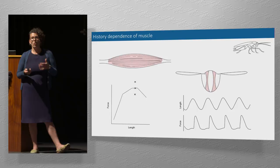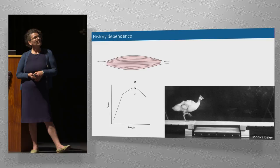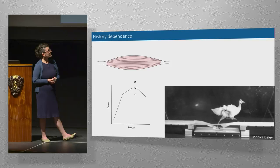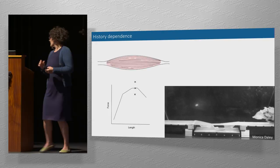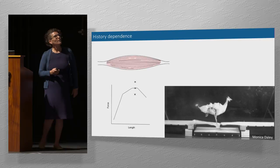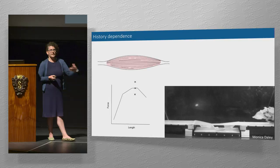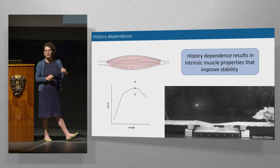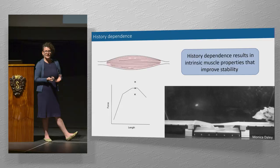Everything our muscle is doing in an organism is subject to some history — something that happened before and something that happened now. A bunch of work from Monica Daley's lab at the RVC has looked at what is a really important functional consequence of this history dependence. If we make a guinea fowl run over a drop it can't see, it's pretty good at self-stabilizing — as it goes down that drop and comes back out, its muscle undergoes a different pattern of stretch and shortening, experiencing a different history. Monica's work has shown this is really important in giving us pre-flexes or intrinsic muscle properties and improving stability.